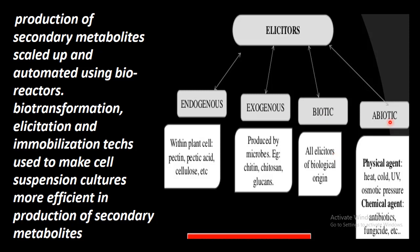Abiotic elicitors come from non-living sources. Physical agents such as heat, cold, UV rays, and osmotic pressure are used, as well as chemical agents like antibiotics and fungicides. These abiotic elicitors are used to stimulate secondary metabolite production. Thank you, students — we'll meet again in the next discussion.